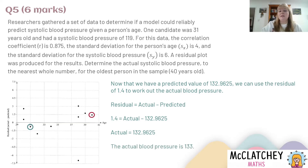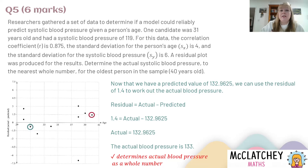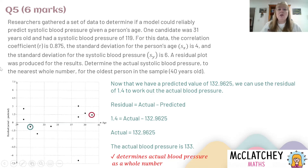We know the residual for that person was 1.4, which we worked out very early on. Using the formula: 1.4 equals actual take away 132.9625, so the actual blood pressure is 134.3625. We need to round that to a whole number, because they told us to give it to the nearest whole number — and it doesn't make sense to have blood pressure to four decimal places. Make sure you read the question carefully, because some students would have given the answer with four decimal places and missed that fifth mark.